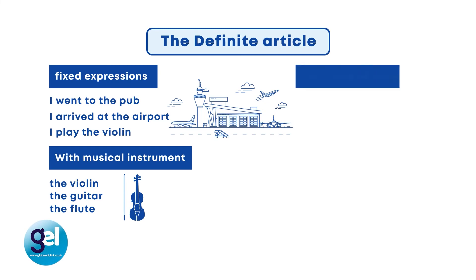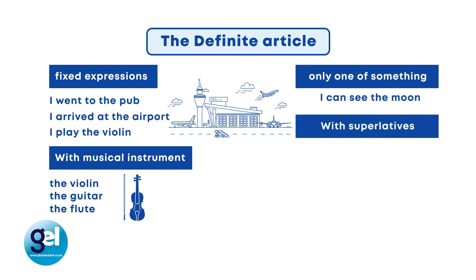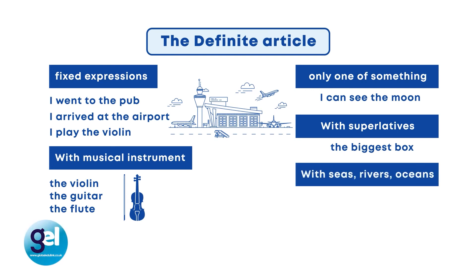We also use the definite article when there is only one of something. I can see the moon — there is only one moon. I can see the sun — there is only one sun. With superlatives: the biggest box, the tallest building. With some defining expressions: the first, the second, the only. And we always use the definite article with seas, rivers and oceans — for example, the River Severn, the Pacific Ocean.